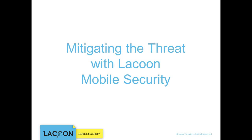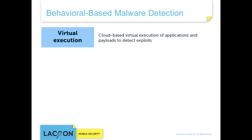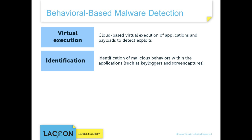Lacoon provides advanced mechanisms to identify exploitation and malware activity on mobile devices. These measures are designed to detect malicious behavioral patterns against secure containers and enterprise content. Since Lacoon's solution is behavior-based and not signature-based, it can also detect zero-day threats. Lacoon's capabilities include cloud-based virtual execution of applications and payloads to detect exploits, and identification of malicious behaviors within applications such as key loggers and screen captures.